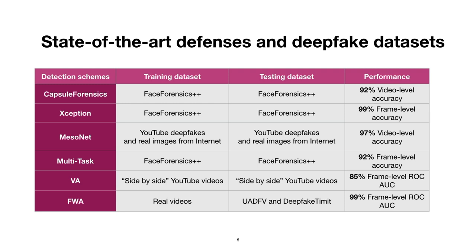This table shows the detection performance of existing state-of-the-art schemes, as claimed in their original papers. Each row presents a different scheme. You will see that they are usually trained and tested on the same dataset, claiming high performances of up to 99% success through a variety of metrics.